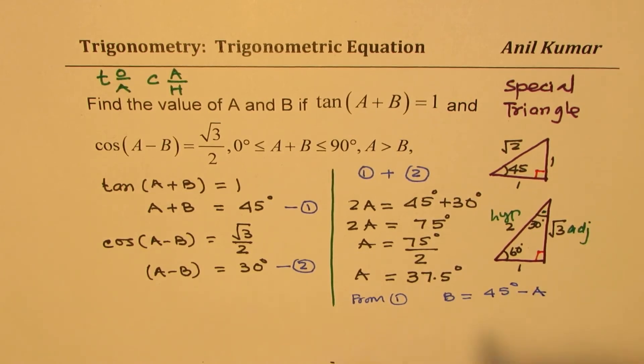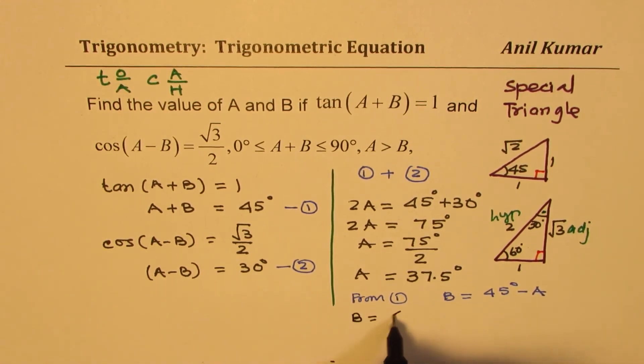...we know B is equal to 45 degrees minus A. So we can get the value of B from here. So A+B is 45, so B equals 45 degrees minus 37.5 degrees.